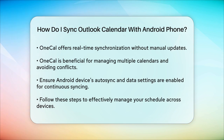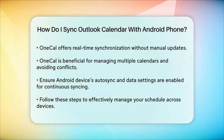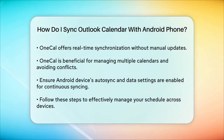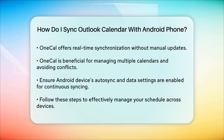In all cases, make sure your Android device's Auto Sync and data settings are turned on to ensure continuous synchronization. For instance, go to your Android settings, scroll down to Accounts and Sync, and ensure that your Outlook calendar is set to Auto Sync. By following these steps, you'll be able to keep your Outlook calendar in perfect sync with your Android phone, making it easier to manage your schedule on the go.